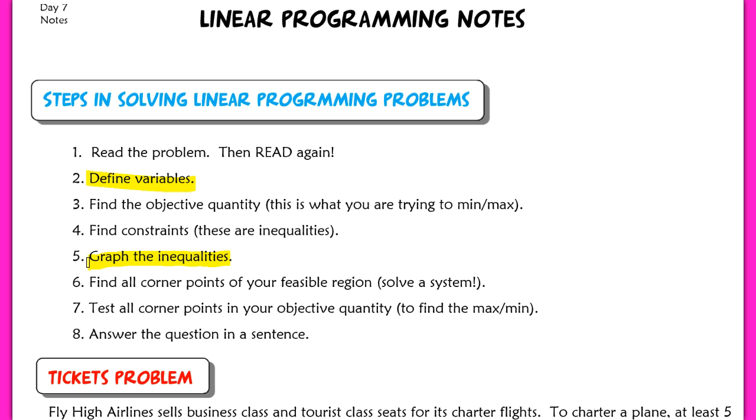Then you're going to find your corner points for your feasible region. Basically all you're doing when you find your corner points is solving a system. Again, just more skills that you've been doing and practicing during this chapter. Then finally, you're going to test those corner points. Once you figure out what your corner points are, you will test those corner points inside your objective quantity to figure out which one produces the actual maximum or the minimum that you're looking for. And then finally, make sure you answer the actual question in a complete sentence.